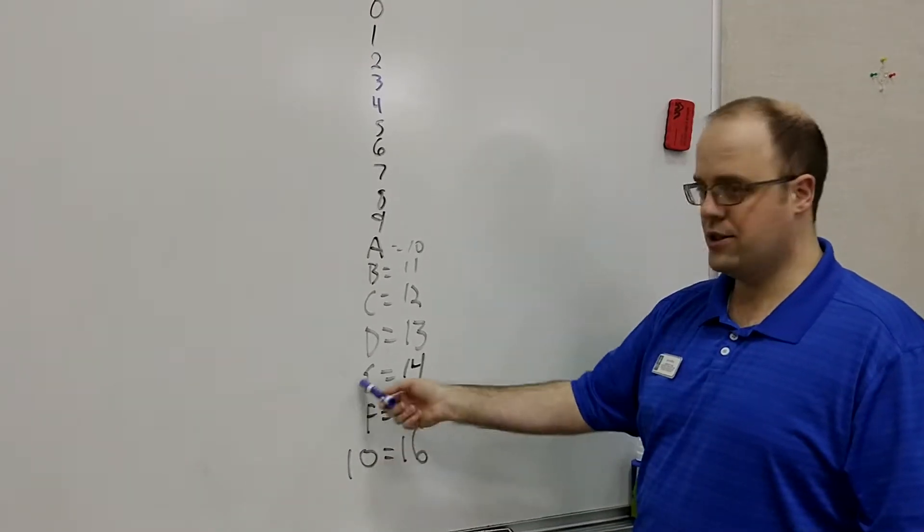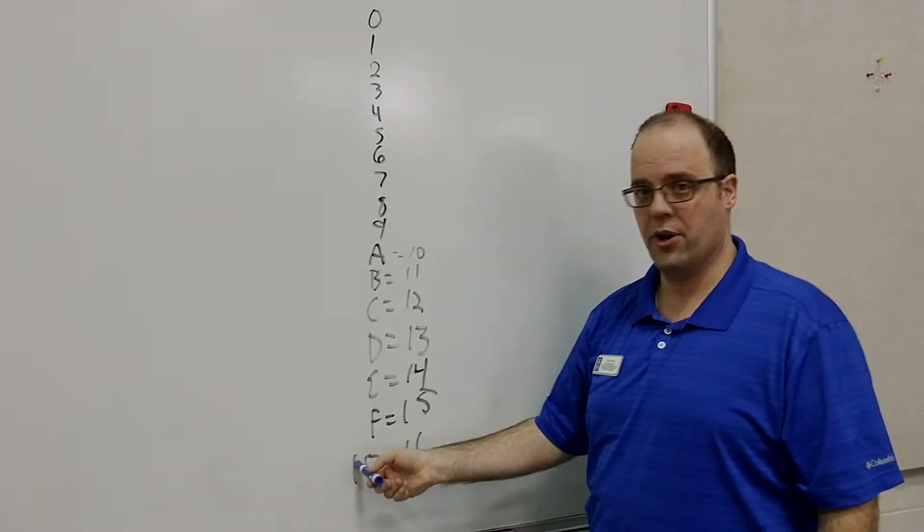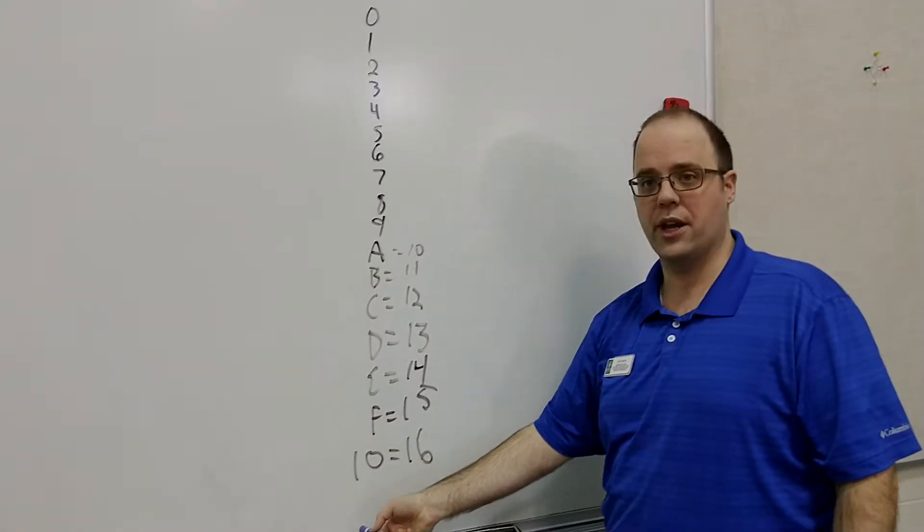But then when I get to 15, what I do is I run out of digits that I can use. So I go to the next digit, which would be 0, and I carry 1 over.